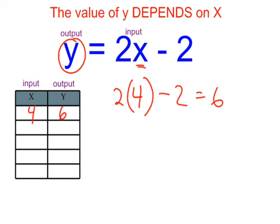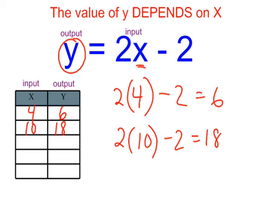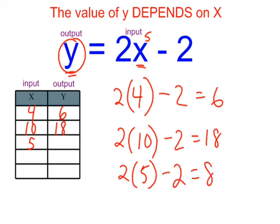Let's do an input of 10. I'm going to replace x with 10. 2 times 10 is 20, and 20 minus 2 is 18, so the value of y would be 18. Let's do one more — let's give x a value of 5. 2 times 5 is 10, minus 2 is 8. So if I have an input of 5, I'll have an output of 8.